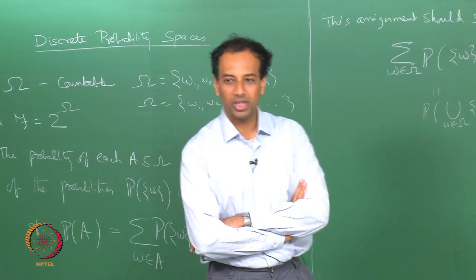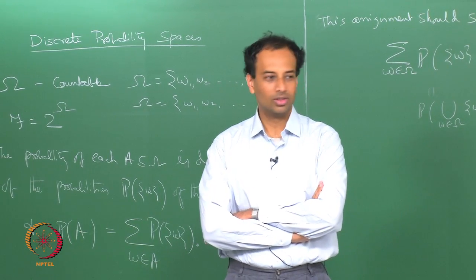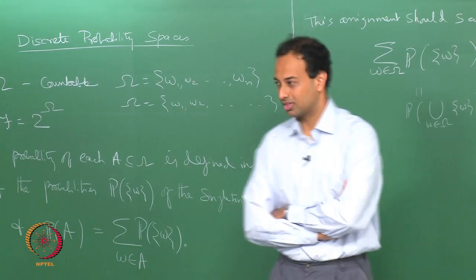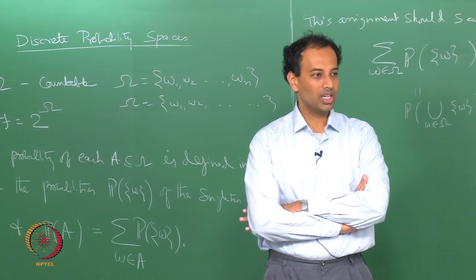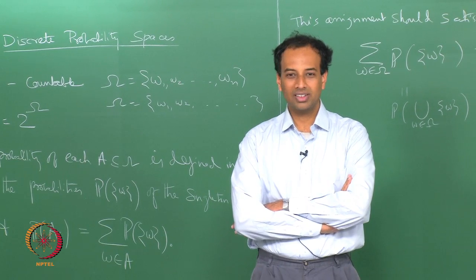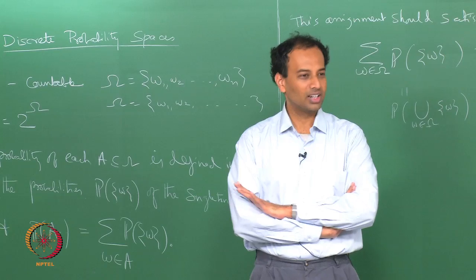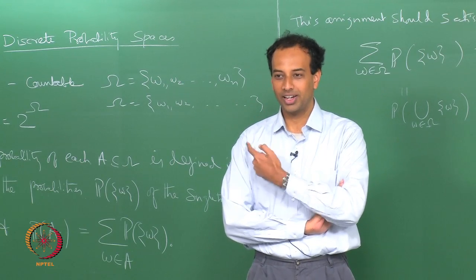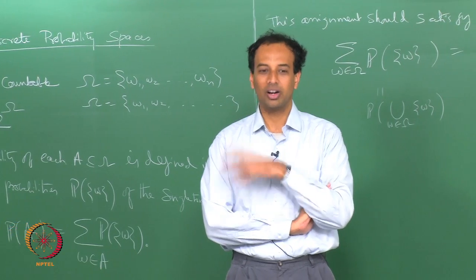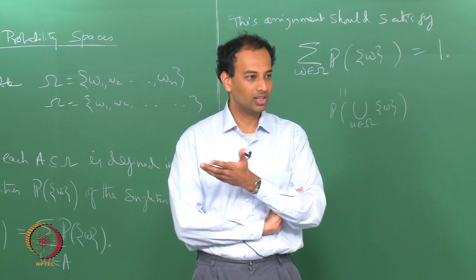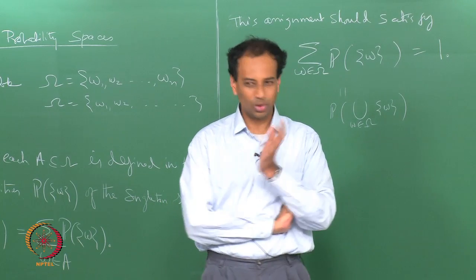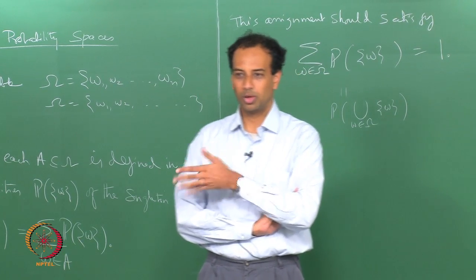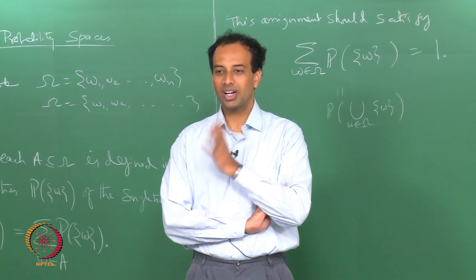Taking F equal to 2 power omega turns out to be the biggest sigma algebra. To assign probabilities to each and every subset is actually mathematically impossible in certain circumstances, but in discrete probability cases this problem never arises — which is why in elementary probability courses you always think all subsets of omega are events. This easy case is where you can assign probabilities to all subsets of omega. When omega is uncountable, this is not possible.